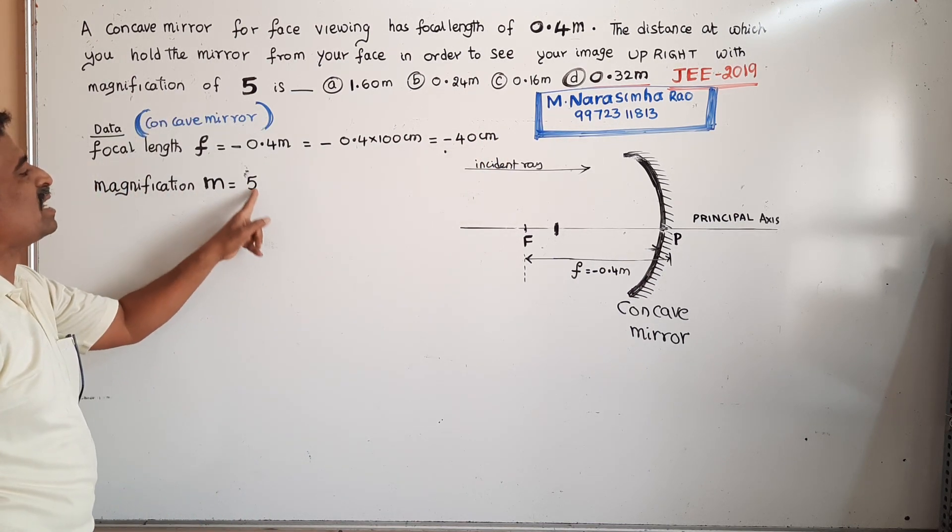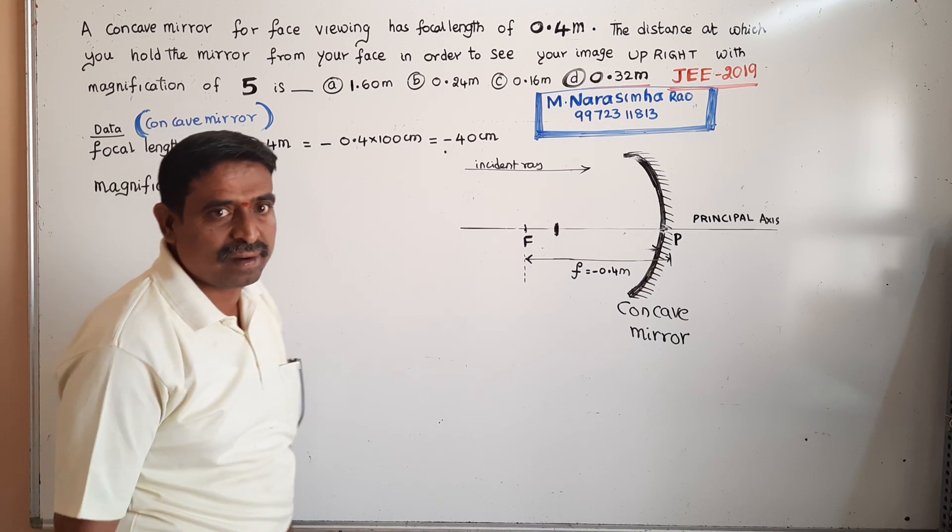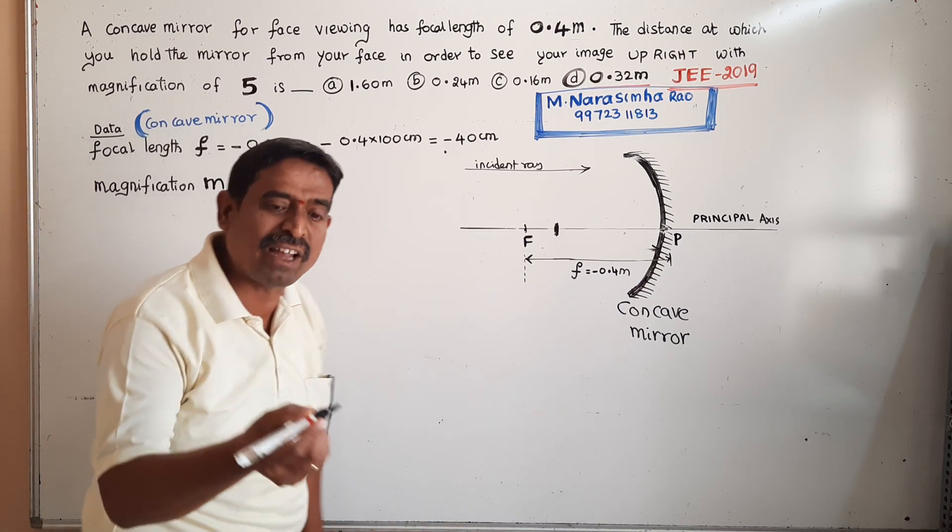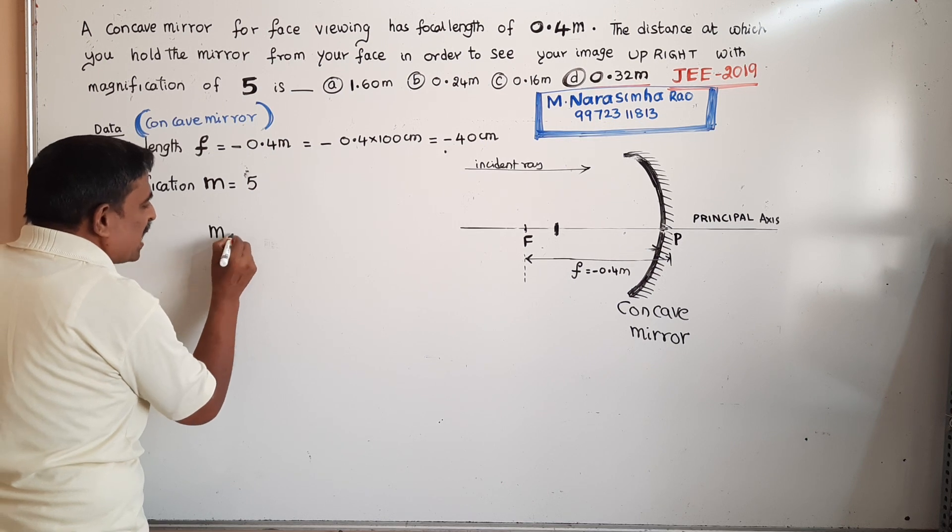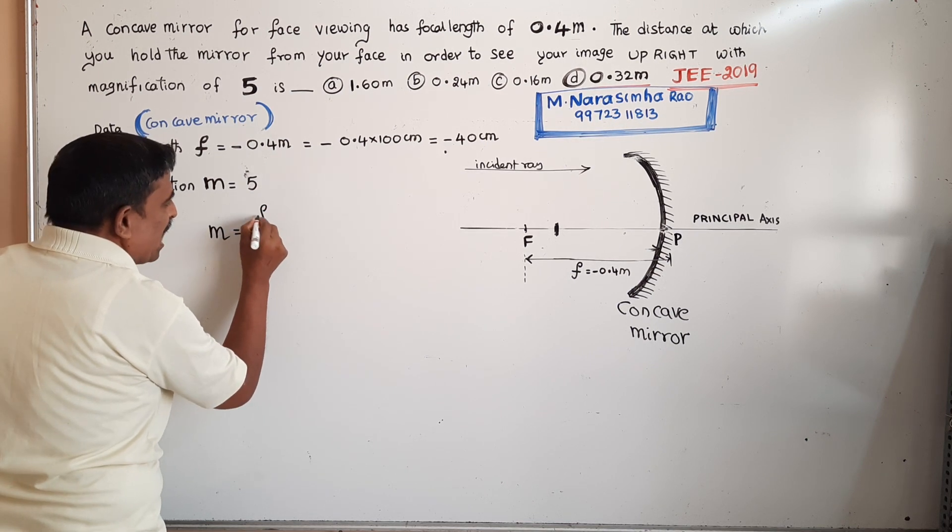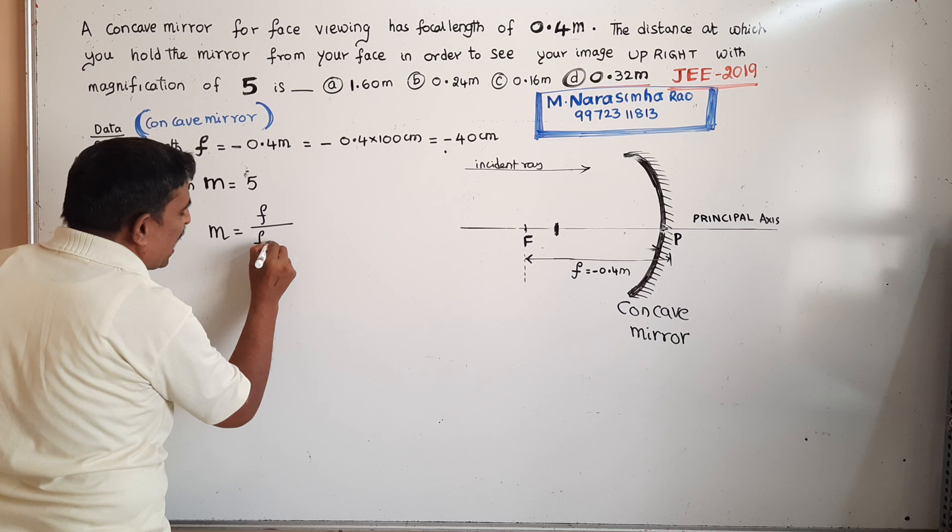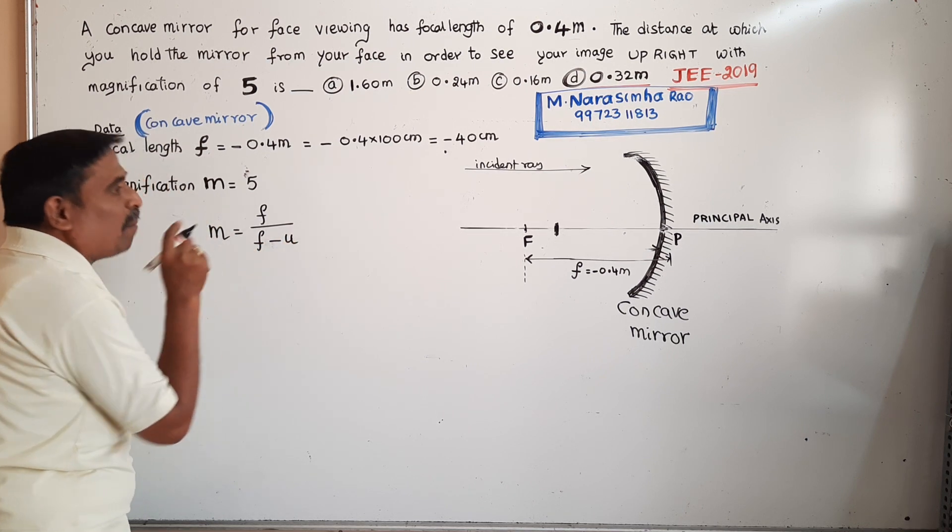Next, magnification is given as 5. We have a formula for the mirror: magnification m equals f divided by (f minus u), where u is the object distance.